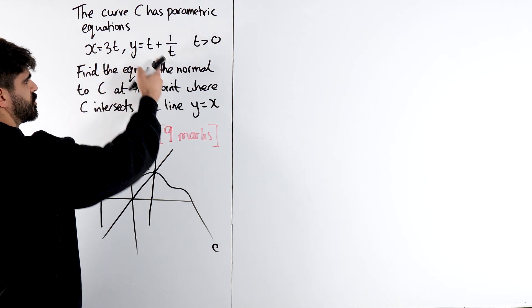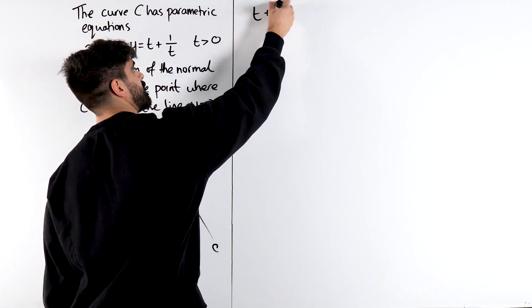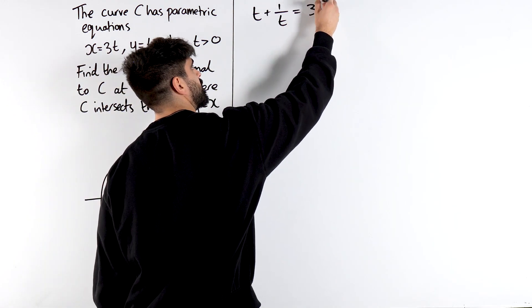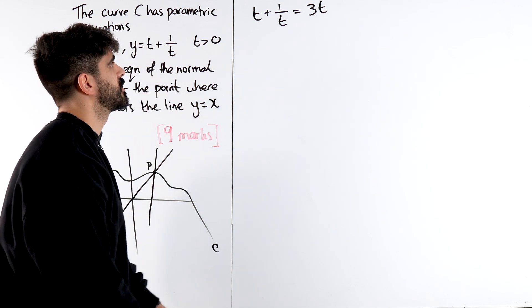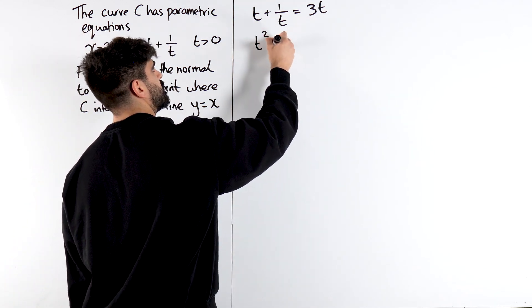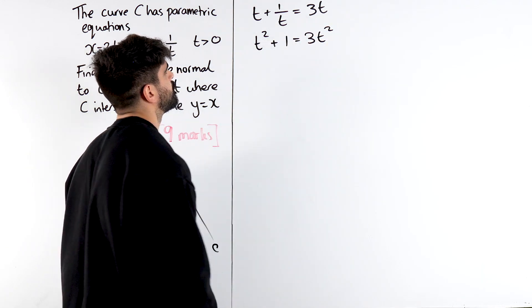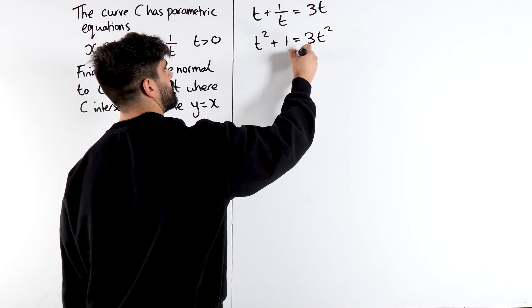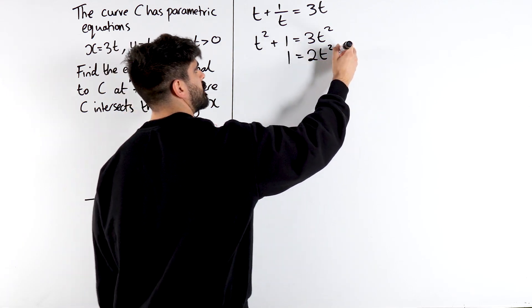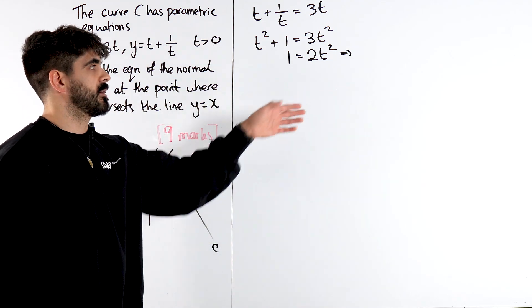Making our substitutions, Y is t plus 1 over t equals X, which is 3t. Now it's clearly simultaneous equations vibes. Multiplying through by t, we get t squared plus 1 is 3t squared. Bring this over here, we get 2t squared is 1, divide by 2 and then root that. We get a half, then we root that, we're going to get 1 over root 2.